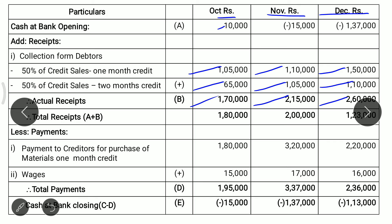Now payments: first, payment to creditors for purchase of material with 1 month credit — October Rs. 1,80,000, November Rs. 3,20,000, December Rs. 2,20,000. Wages: October Rs. 15,000, November Rs. 17,000, December Rs. 16,000. Adding creditors and wages gives total payments: October Rs. 1,95,000, November Rs. 3,37,000, and December Rs. 2,36,000.